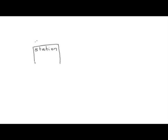Let us start working on the ER diagram on the whiteboard. The first thing we need to model is a station. Station is obviously an entity. What are the attributes? Usually there is a station code to uniquely identify a station, and there is a name. For our purpose that is about all we need.